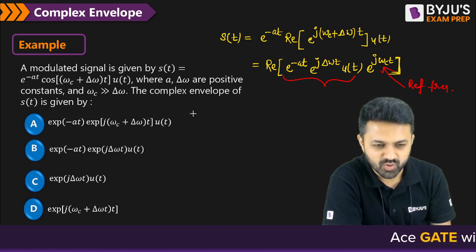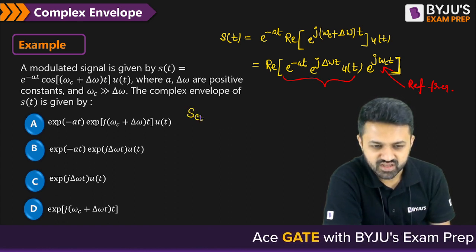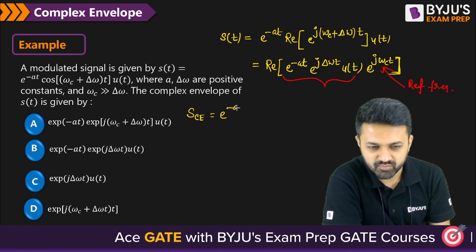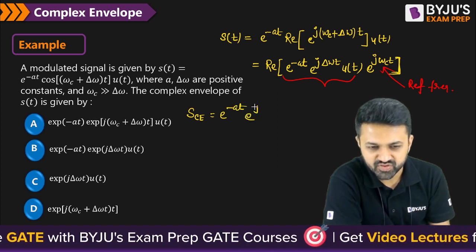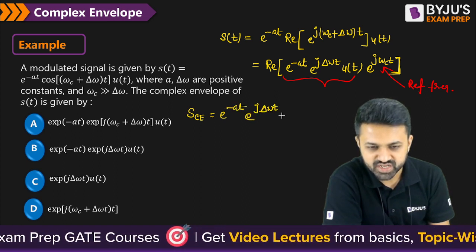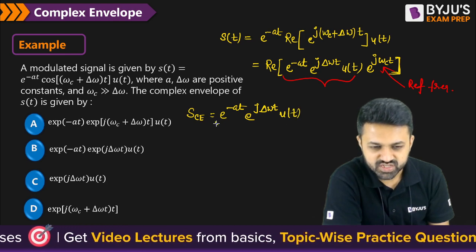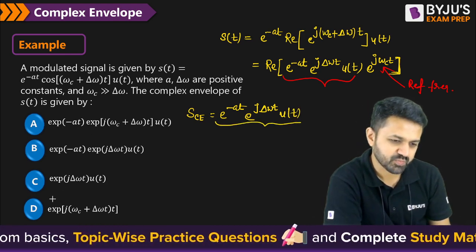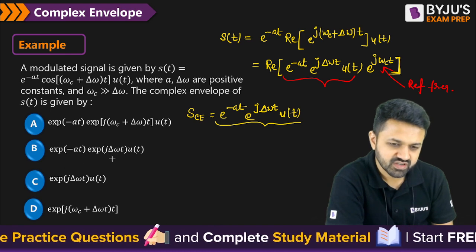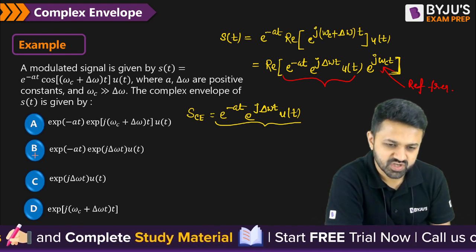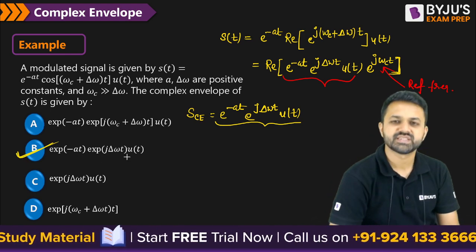So the complex exponential of this signal is e^(-at)·e^(j·Δω·t)·u(t). So this will be the complex number. So if you check the options, then we have the e^(-at)·e^(j·Δω·t) option B. So option B is the right answer.